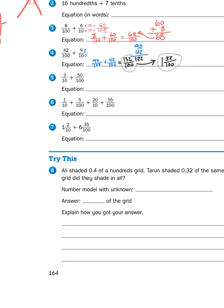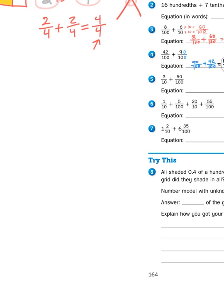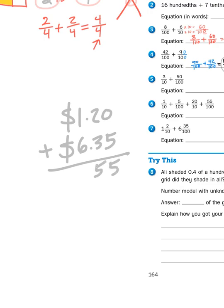Let's take a look at number seven. One and two tenths plus six and thirty-five hundredths. Now again, if I'm thinking of money, I can think of this as dollars and cents. So if I have one dollar and two dimes, that's the same as saying a dollar twenty. And if I have six dollars and thirty-five pennies, that's like saying six dollars and thirty-five cents. So all I'm doing is adding my fractional parts first and then my whole number parts. So let's add them. Gives me seven dollars and fifty-five cents.